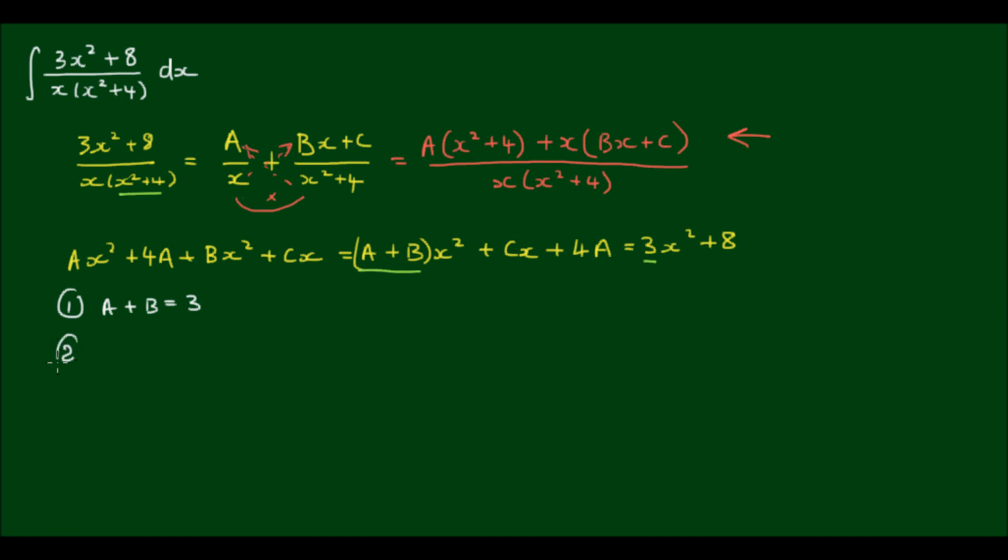In the second instance, I have C is equal to 0, because in here we effectively have 0x. And in the third instance, 4A is equal to 8.